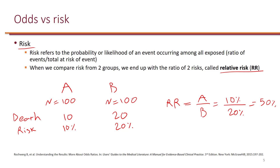When we look at the concept of odds, odds basically refers to the probability of a particular event occurring as opposed to the probability of that event not occurring. So if 10 people died in group A, the remaining 90 people are alive. And if 20 people died in group B, that means the remaining 80 people are alive.